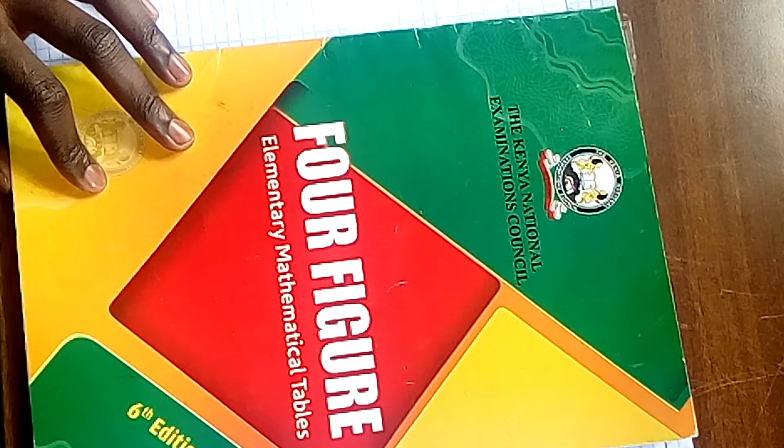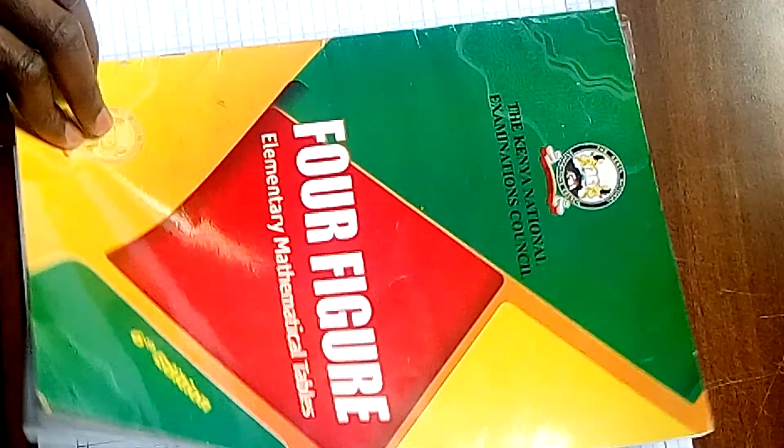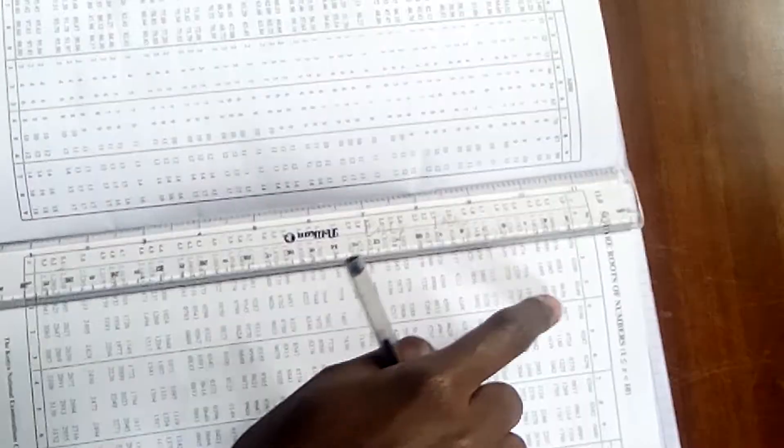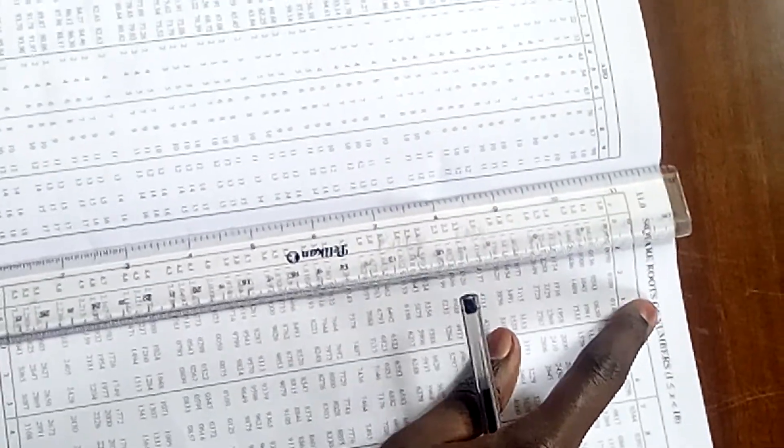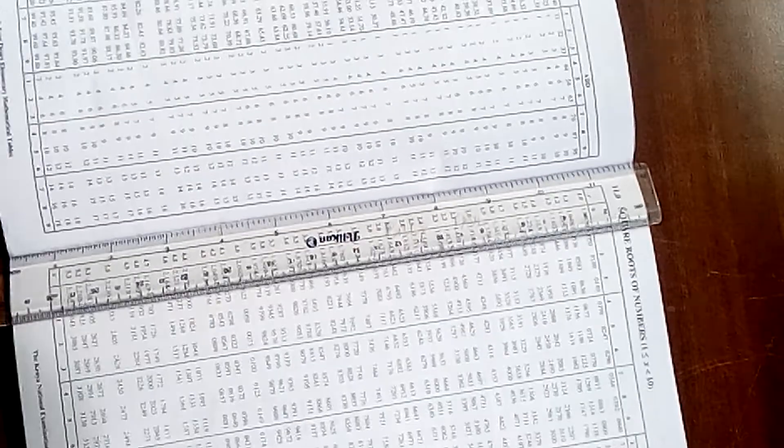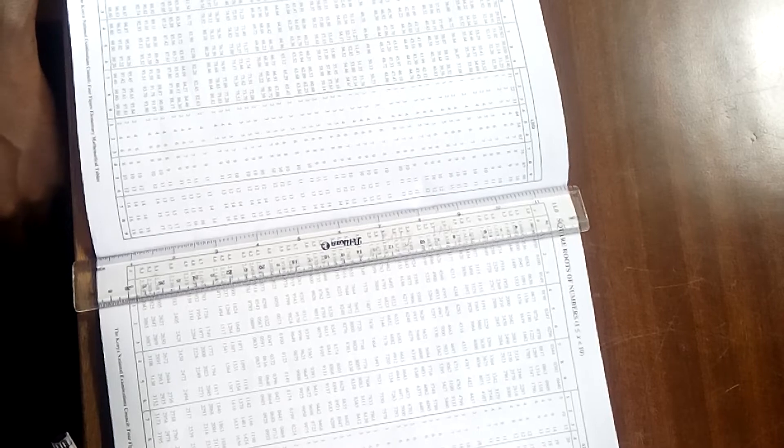And to be more specific, we are going to start with the tables of squares. So how do we use this four-figure mathematical table to find squares of numbers?